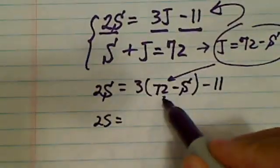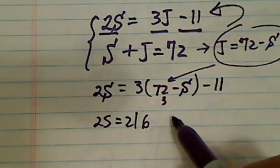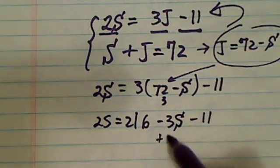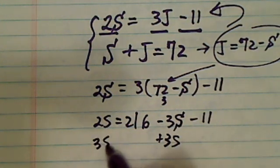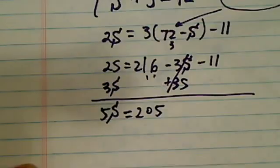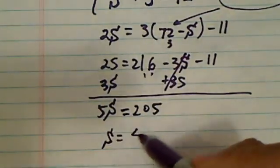2S is equal to 3, that's 216, right? Minus 3S minus 11. I'm going to add 3S. So you have 5S is equal to minus 11, that's 205. Okay, just subtract it over there. And then S is equal to 41.